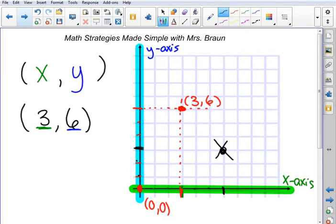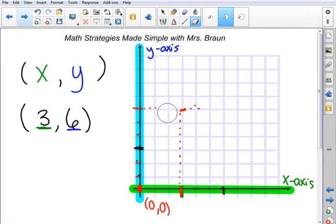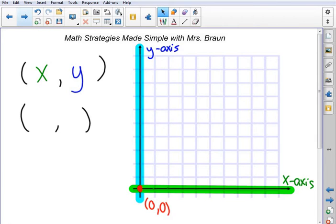So when you're doing this, you want to make sure that you're always going in order from x to y. Let's take a look at another example. Let's take a look at the point (4, 7).